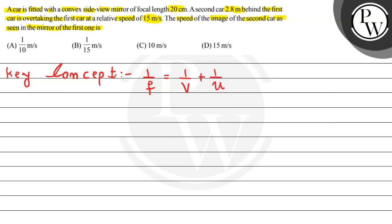Simply here you have to see what the question is talking about. A car has a convex side view mirror which has focal length 20 cm. So f is given as 20 cm.